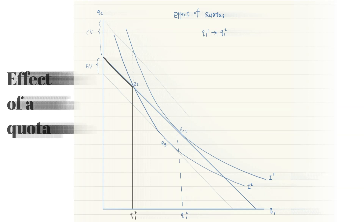The original equilibrium is E1 and the original quantity is Q1. If the quota is smaller than the original quantity, it will generate a kink in the budget line. The new equilibrium is E2, which is on a lower indifference curve. To find the equivalent variation, we focus on the new lower indifference curve and the original price system without a kink, then parallel shift the original budget line downwards until it is tangent to the new indifference curve. The vertical distance is the equivalent variation.